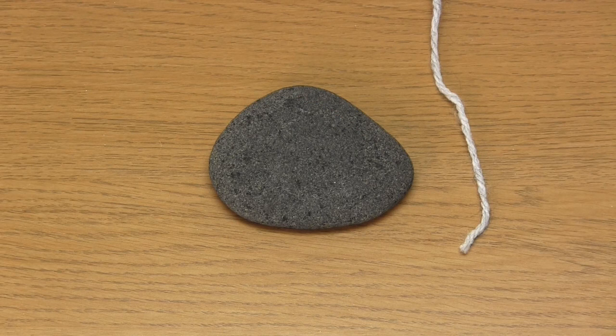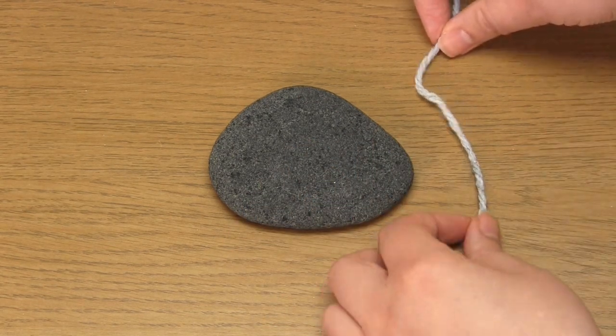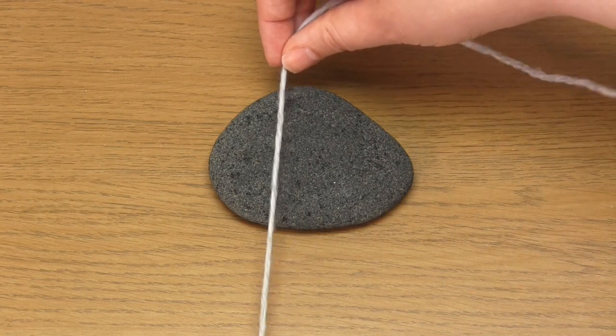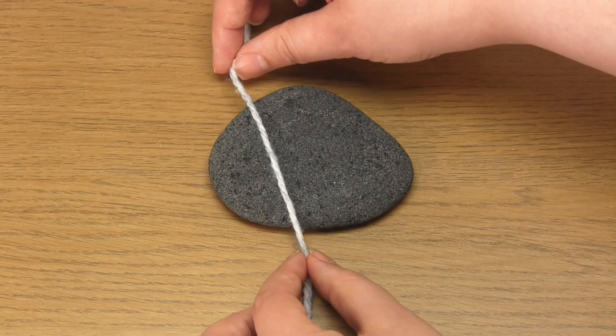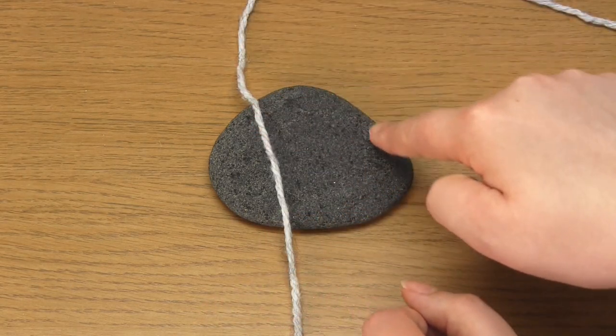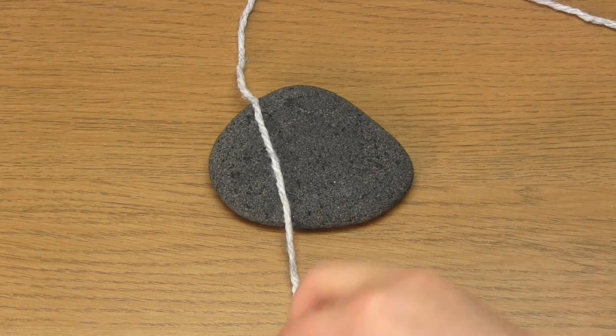Right so the first thing you need to do is decide which side of the pebble is the back and have that facing towards you. Then take the end of your chosen yarn and drape it over the pebble. You'll want some excess yarn left at the end so make sure you leave a decent size yarn tail.